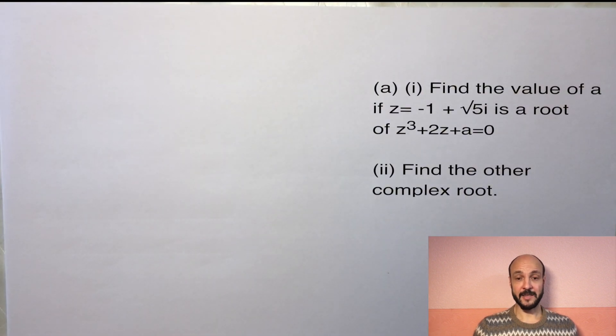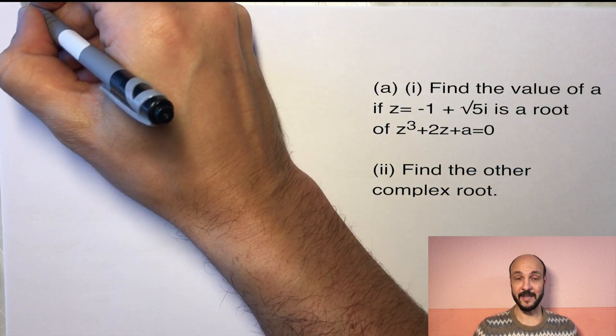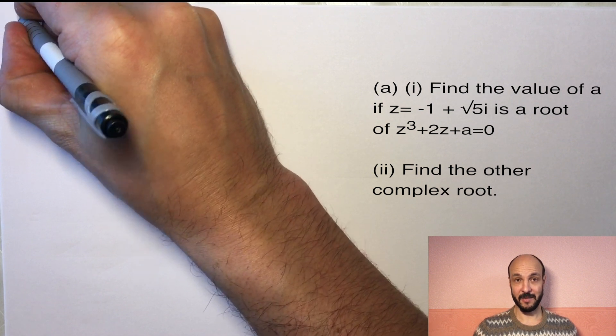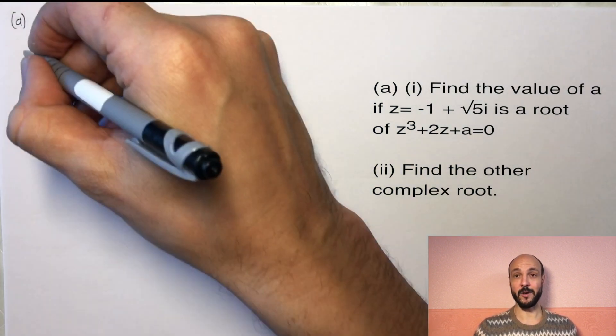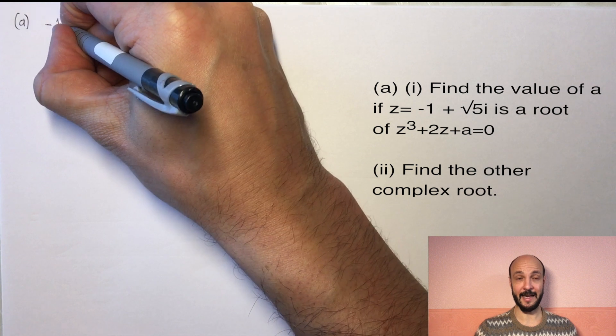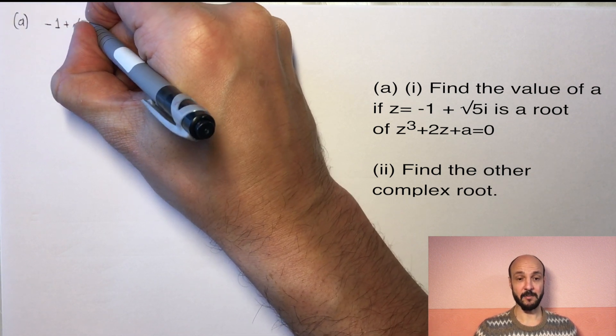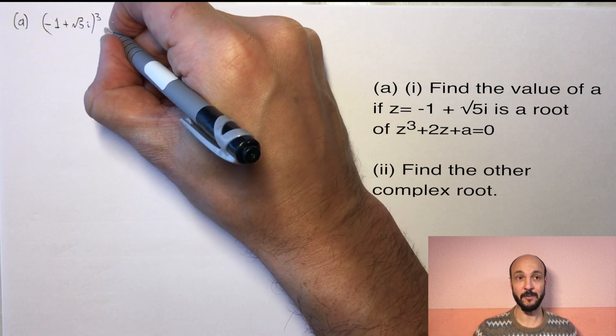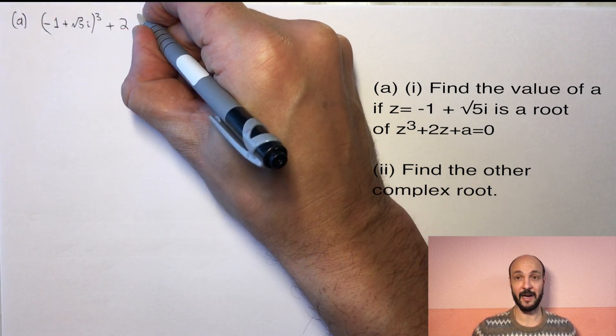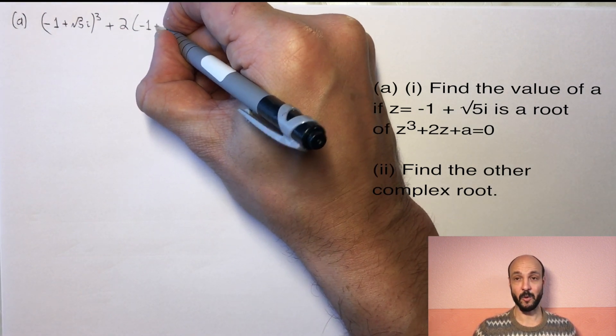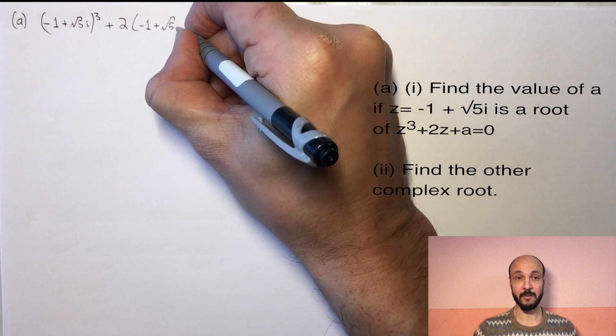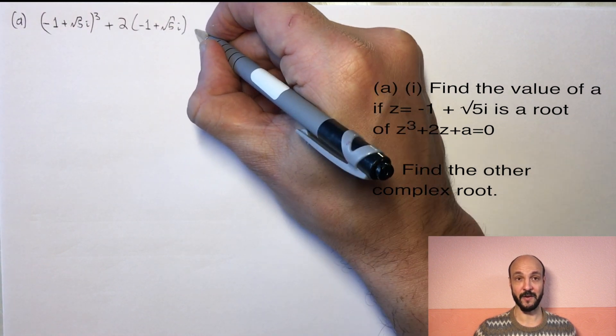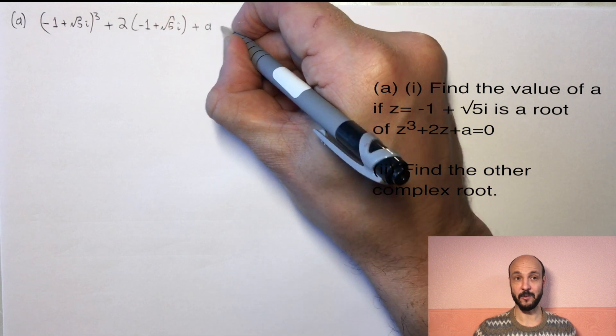So for part (a), there are several ways to do this, but we're simply going to substitute our root into the equation and expand everything and find out what's left is being equal to a. So if we start by writing our equation, everywhere we see z we replace it with -1 + √5i. So we'll write (-1 + √5i)³ + 2(-1 + √5i) + a = 0.